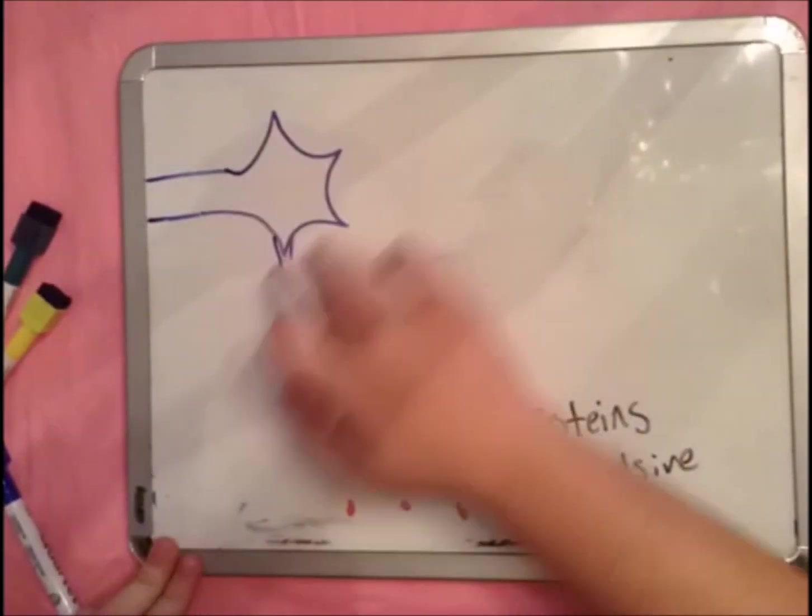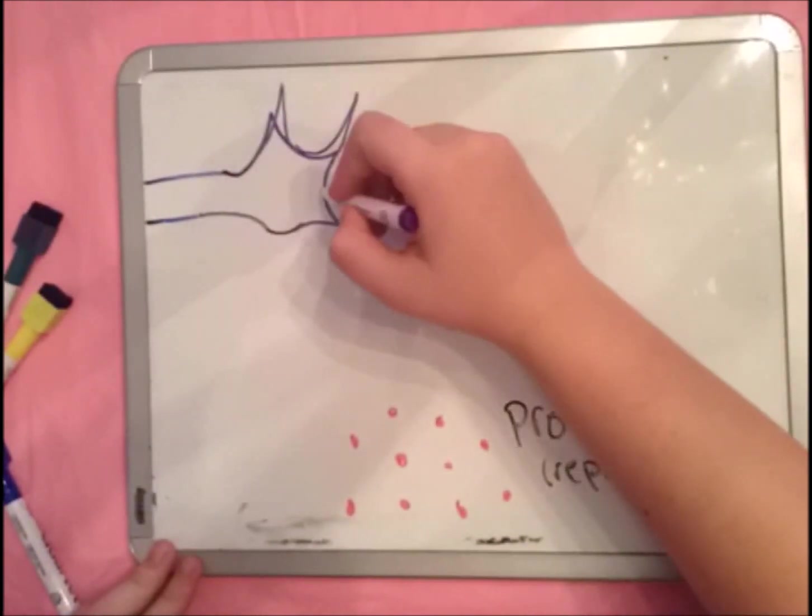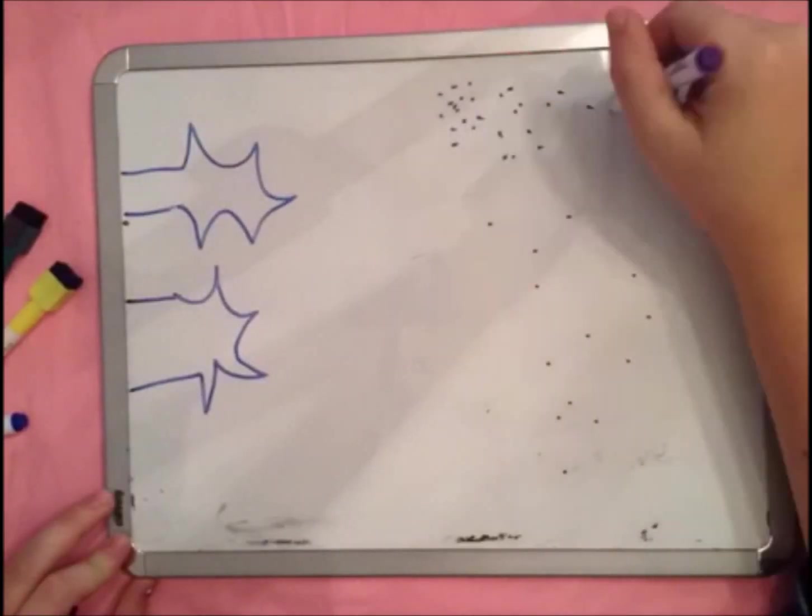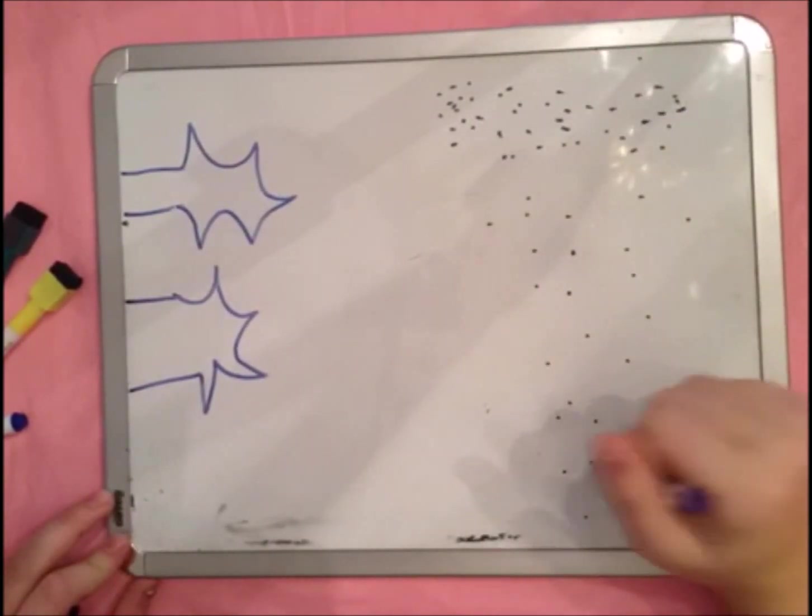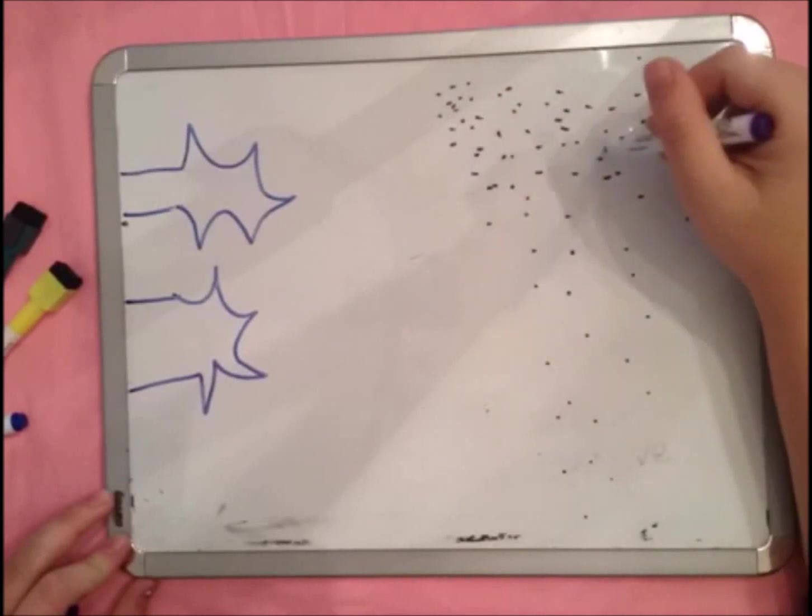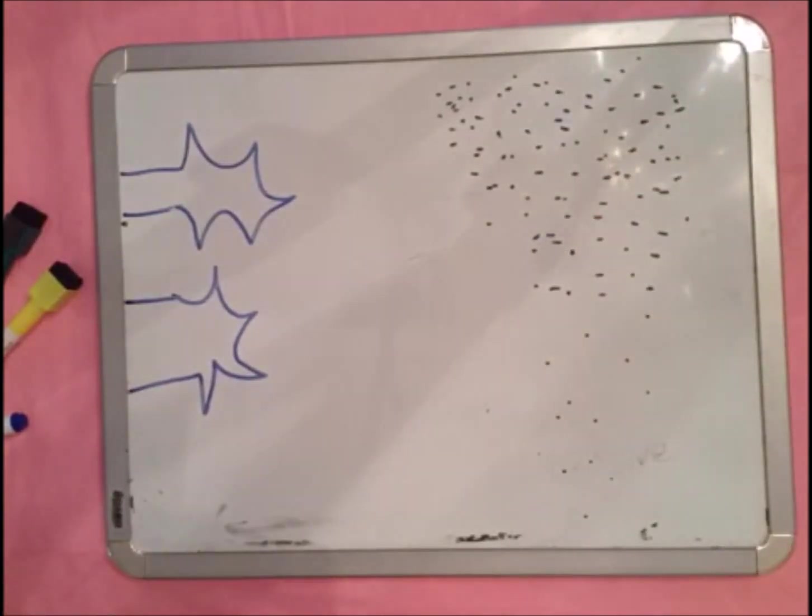If filipodia sense a negative cue, the feelers will shrink back and the growth cone will begin turning away from the cue. Sometimes filipodia exploring their surroundings will be attracted to or repulsed by a protein in a gradient and different levels of a protein will cause different responses of the growth cone.